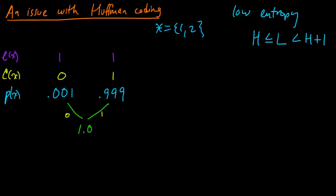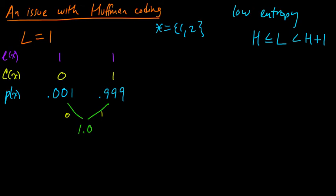Since all of the codeword lengths are the same, the expected codeword length must also be that value — in this case, 1. So that looks maybe not too shabby. Let's also do, just for comparison, a Shannon code, and see what Shannon has to say in this situation.